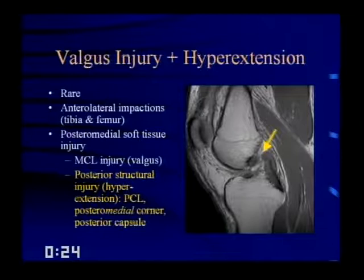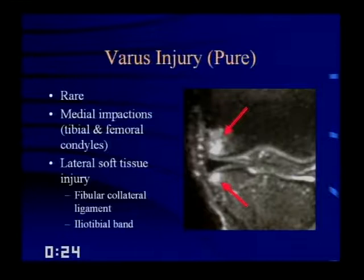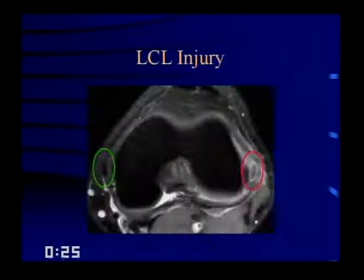Varus injuries are less common than valgus injuries. A pure varus injury is particularly uncommon, seen almost exclusively in wrestlers. You get medial impactions of the tibial and femoral condyles — opposite of a clipping injury — so look for lateral soft tissue injury. The fibular collateral ligament may show abnormal signal within and around it, as confirmed on axial images showing the lateral collateral ligament with abnormally high signal compared to a normal medial collateral ligament on the same side.